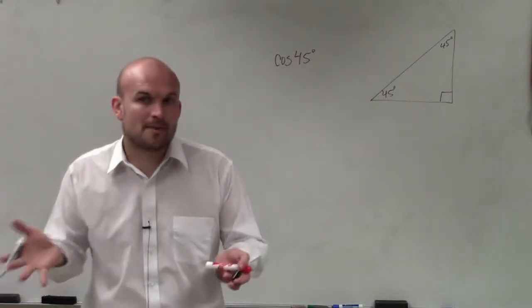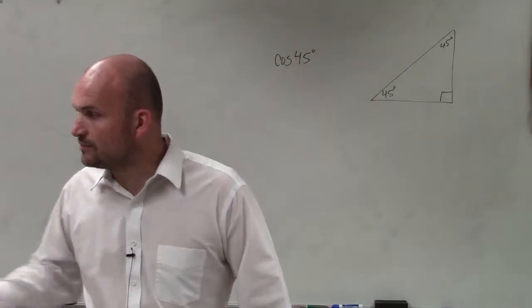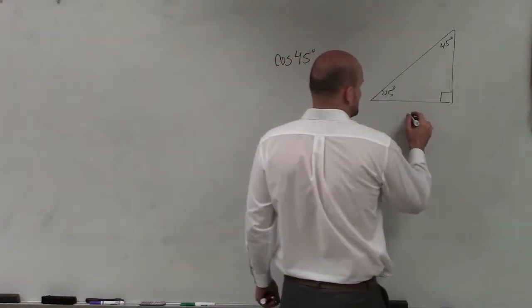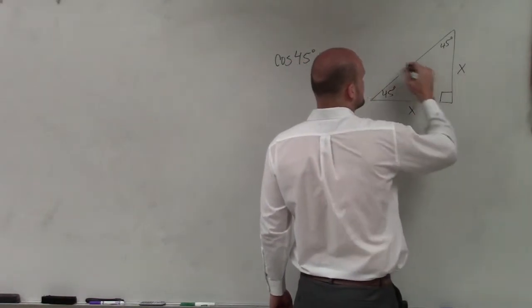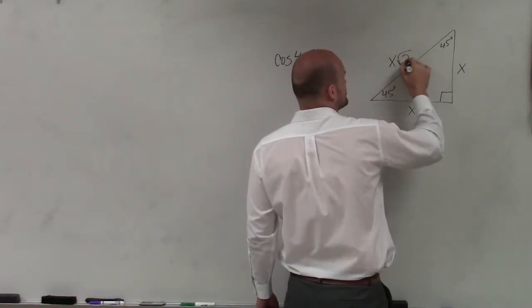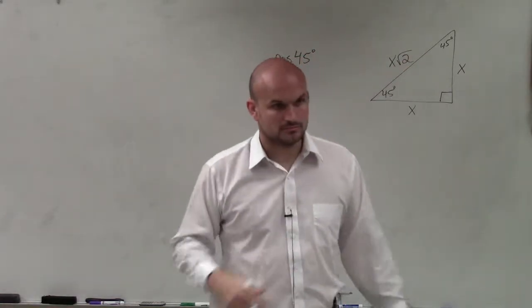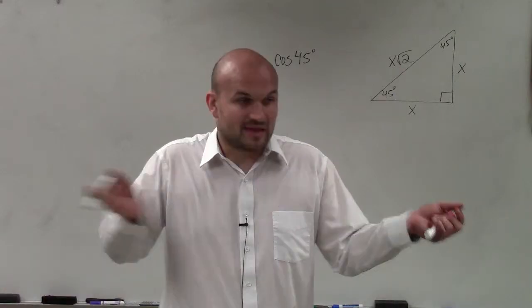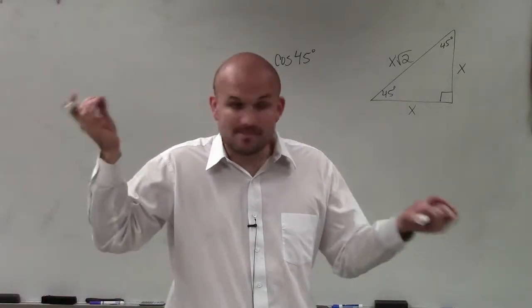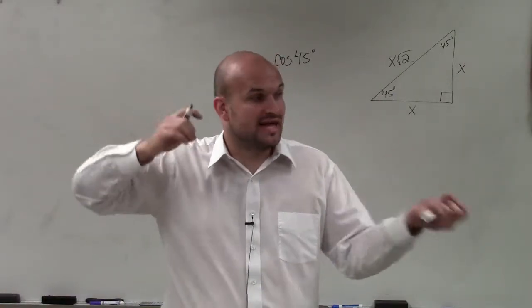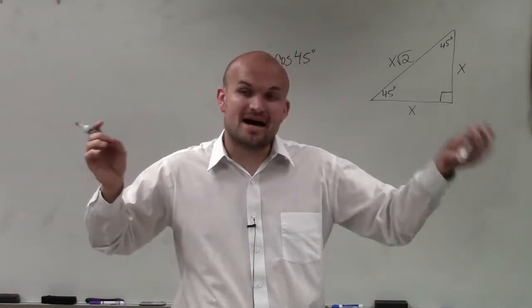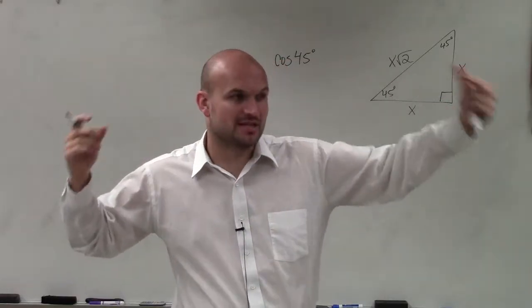Now, if you guys remember from your previous notes, when we had a special right triangle like that, it looked like this. It was x, x, then x times the square root of 2. The legs were exactly the same length. It didn't matter what the length was. The legs were the same length, and the hypotenuse was that length multiplied by the square root of 2.